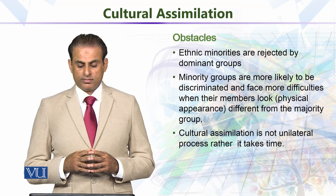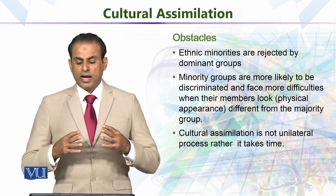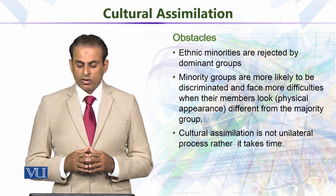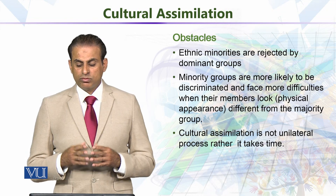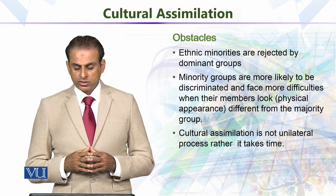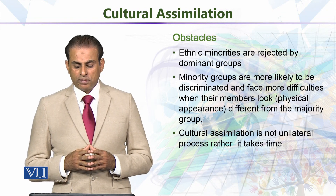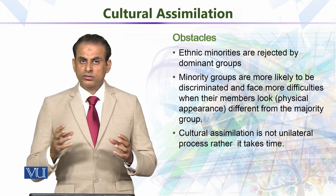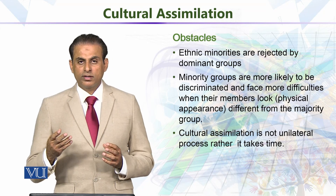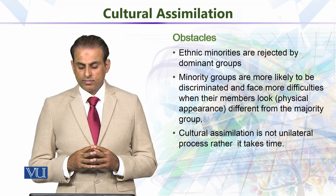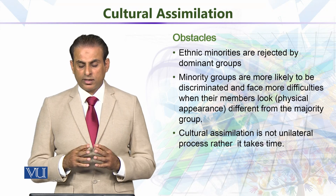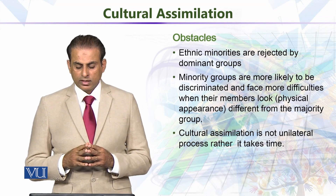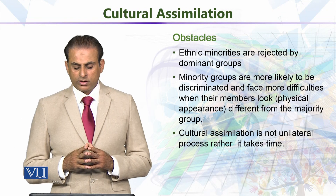What are the obstacles in cultural assimilation? Ethnic minorities are rejected by the dominant group. Minority groups are more likely to be discriminated against and face more difficulties when their members look physically different — having different types of race or ethnic identity as compared to the majority group. Cultural assimilation is not a unilateral process.